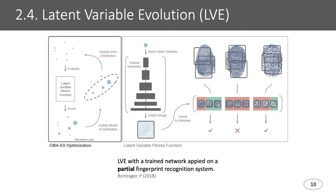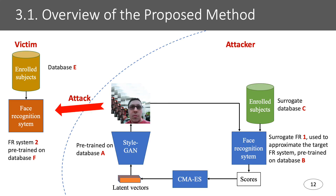Next I will talk about latent variable evolution for master fingerprints, in which fingerprints are generated by a GAN network, then the outputs are scored by a fingerprint recognition system, and the output scores are used by the latent variable fitness function to calculate the latent for the GAN network for the next step. This process repeats several times until some matches are found.